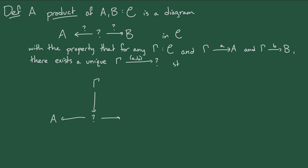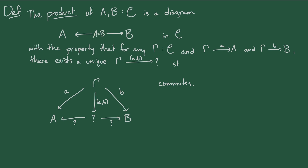It turns out that this property uniquely determines the product diagram, if it indeed exists, up to a unique structural isomorphism. So it's safe to call it the product of A and B, and we usually write A times B for the object, and pi 1 and pi 2 for the maps, which we call projections.